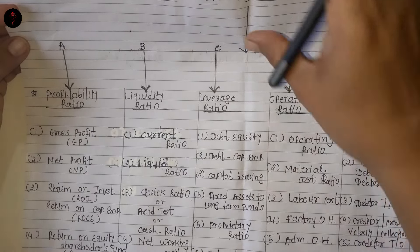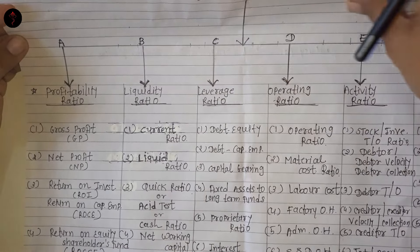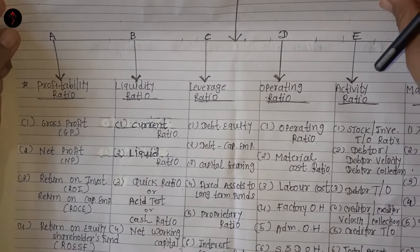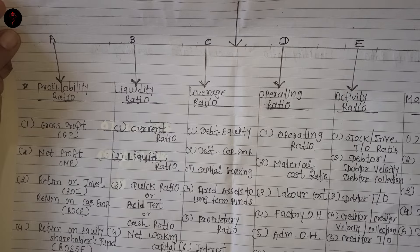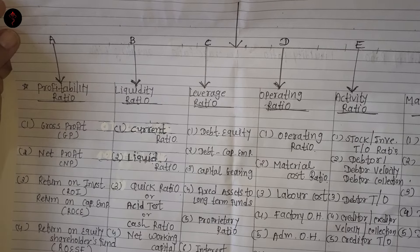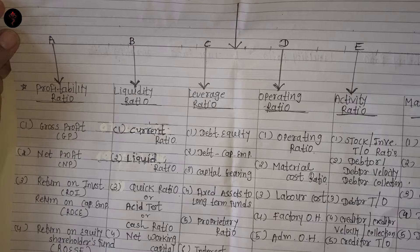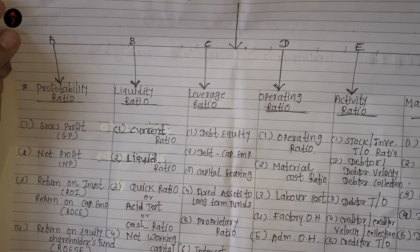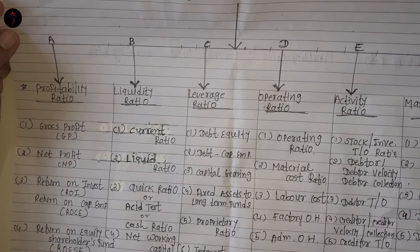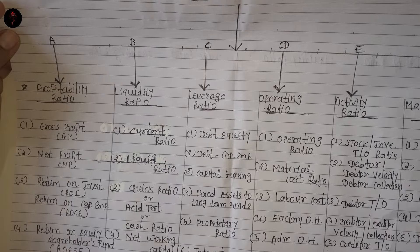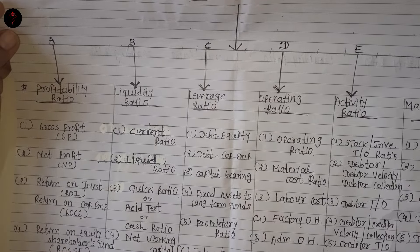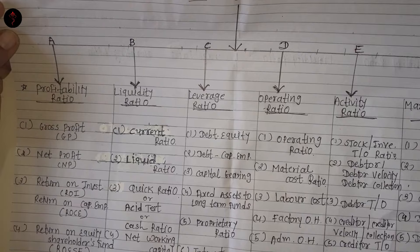और हम उससे आसानी से जान सकते हैं कि profit इतना है या loss इतना है, तो इस वक्त क्या financial position है. But for better evaluation, you need a particular systematic method, and ratio is one of the traditional, very old, very well-known and very famous techniques to compare or to evaluate the financial condition of a company.